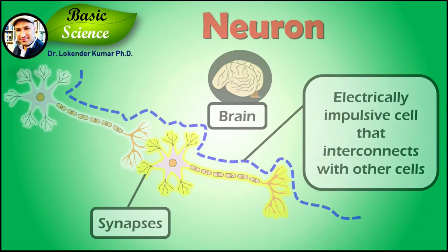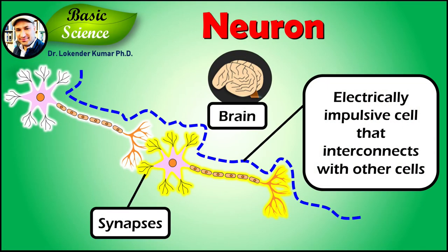A nerve cell or a neuron is an electrically impulsive cell that interconnects with other cells via particular contacts called synapses.